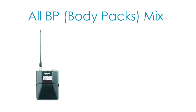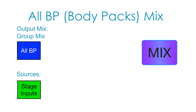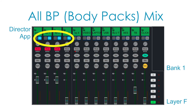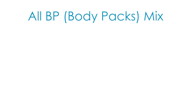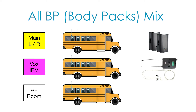The all body packs mix is a group mix that comes from the stage inputs. When this group mix is selected, all the channel faders for body packs will move into position and be turned on and muted. This group mix is routed on several buses, including the main mix, in-ear monitor mix, and the nursery room mix. These mixes can be modified independently from each other.